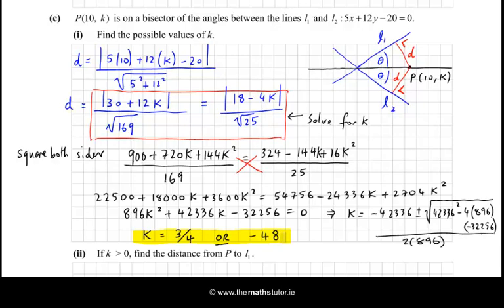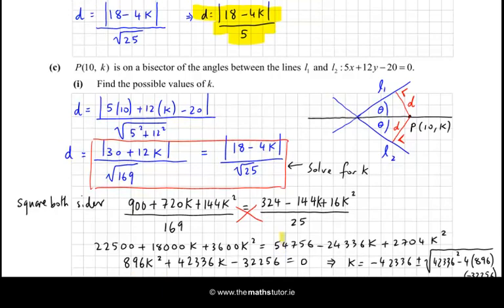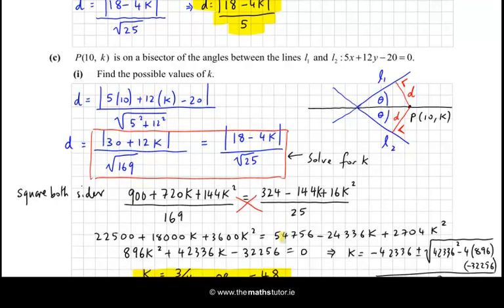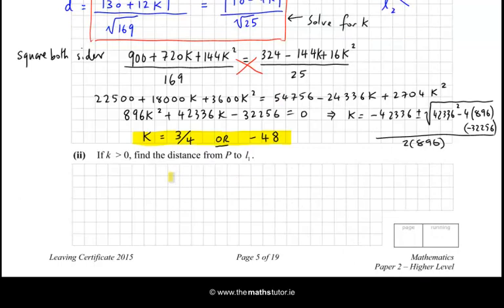Now, if k is greater than zero, find the distance from P to L1. OK, so we knew that the distance from P to L1 was |18 - 4k|/5. So we have |18 - 4k|/5. Well, the absolute value of that is d. I could have chosen the other value for d, because it's the same as the distance to L2, but this one's fine. So now the value of k, which is positive, is 3/4, so it's 4 times 3/4.